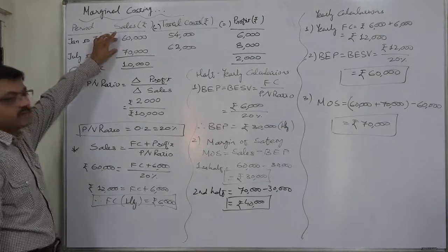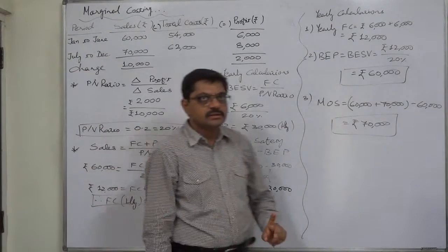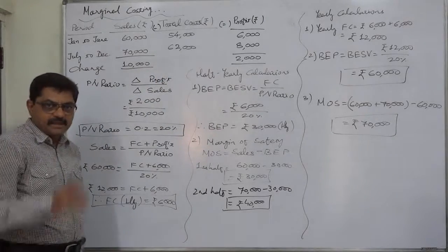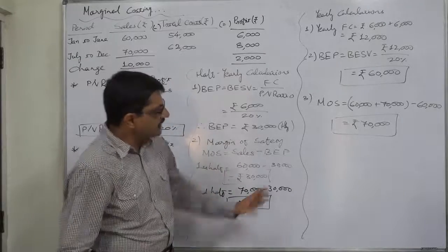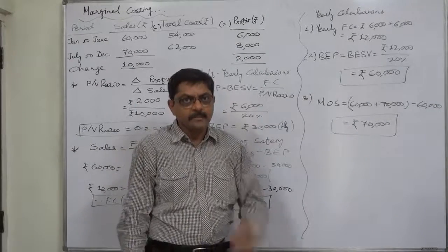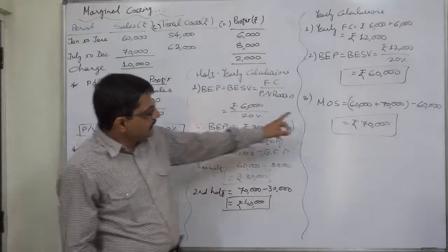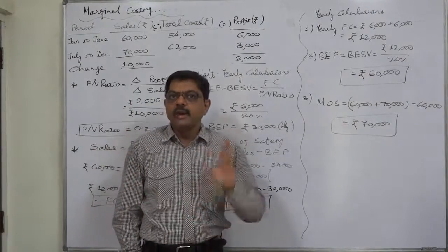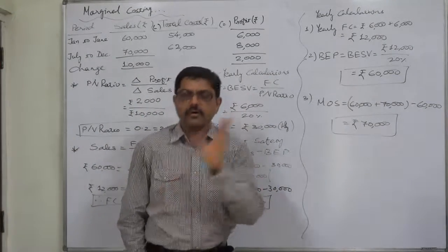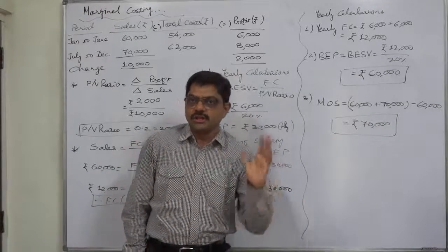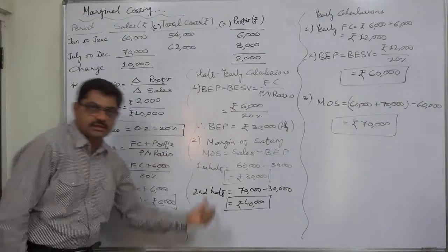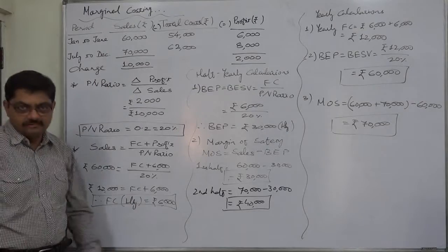Students, please take care whenever you are asked a question with half-yearly data. In problems containing half-yearly data of sales and profit or total cost, examiners are accustomed to asking for BEP and margin of safety on both a half-yearly and yearly basis. But mind well — you need to calculate BEP and margin of safety yearly only if you have been specifically asked in words like 'for the whole year,' 'for the year,' or 'yearly.' If no such terms are used, give all answers based on the period covered in the problem. Thank you very much.